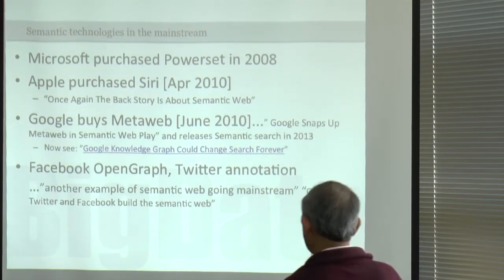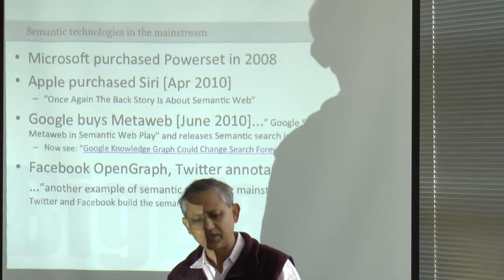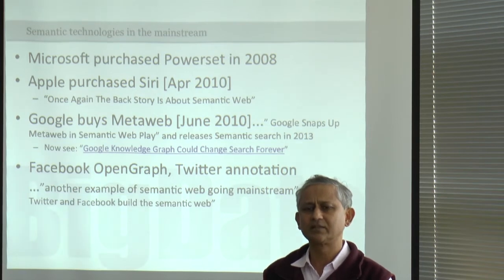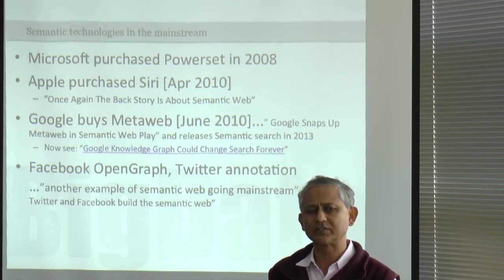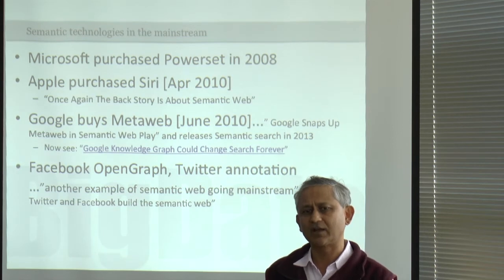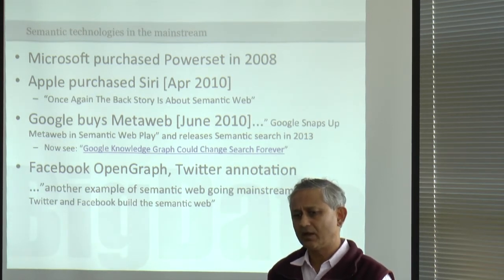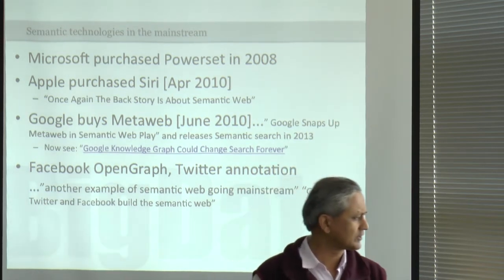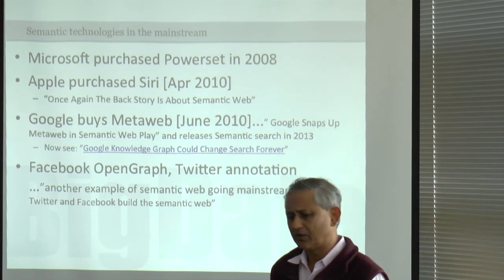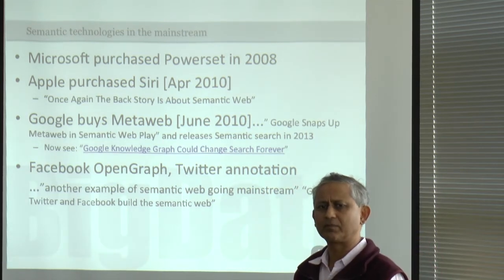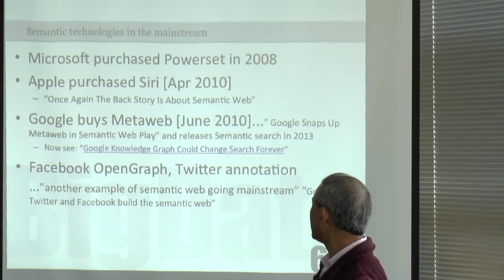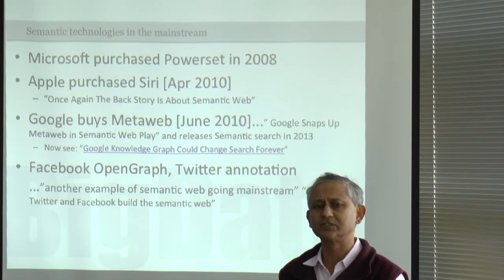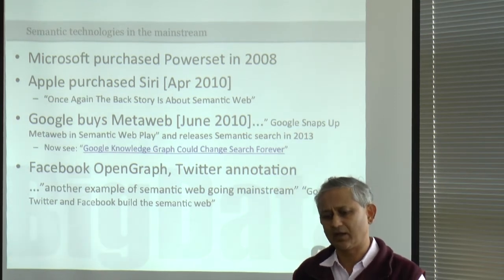Stepping back a bit, about five to seven years ago there was a growing realization that semantic technologies were likely to become practically viable. Before that there was a lot of talk about semantics, and the semantic web term was introduced in 1999. But around 2008 is where I think we really started to see the value of semantics bubble up.